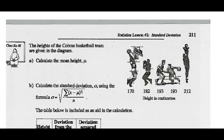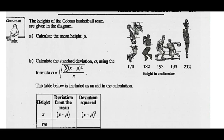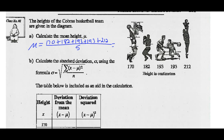The heights of the Cobra's basketball team are given in the diagram. Calculate the mean height. To find the mean, we're going to add all these up: 170 plus 182 plus 193 plus 193 and 212, and divide that by 5. Go ahead and give that a try. You should come up with a mean of 190 centimeters.